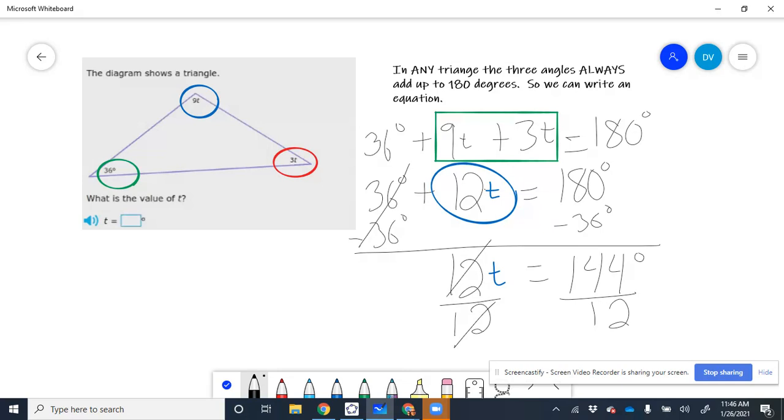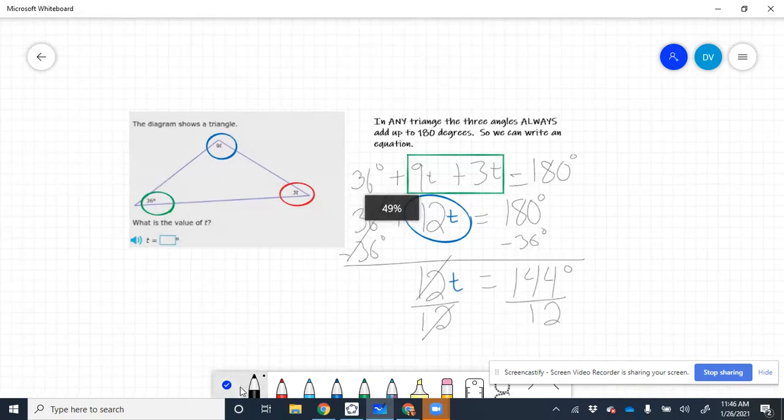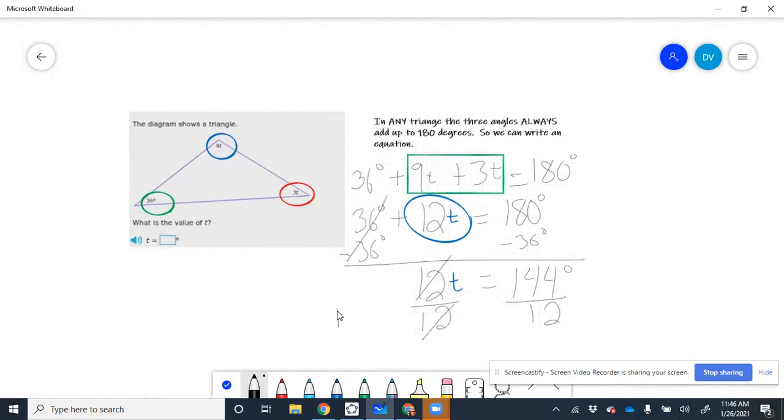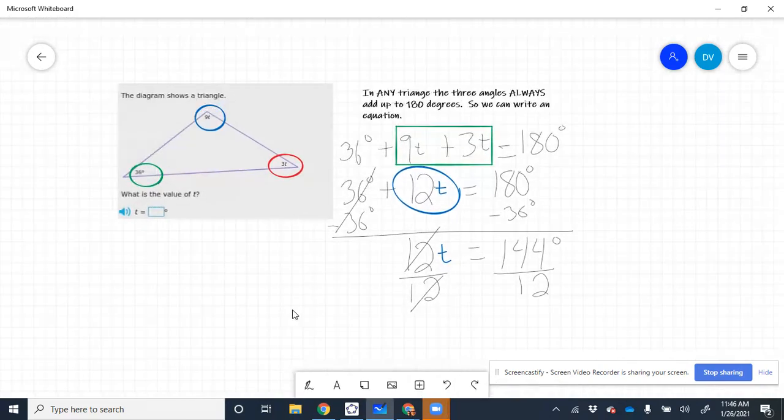When we do that, when we cross off the 12s, remember, it doesn't really go away. It's really 1. We just don't write the 1. 12 divided by 12 is 1. So technically it's 1T, but we are not going to write the 1. We're just going to say T.